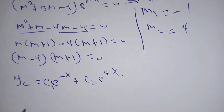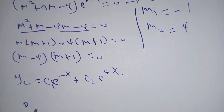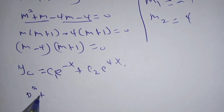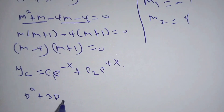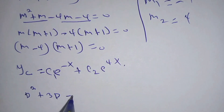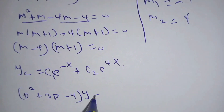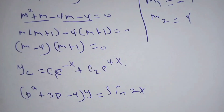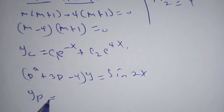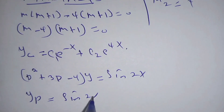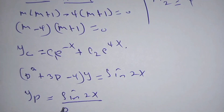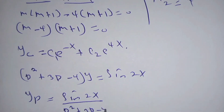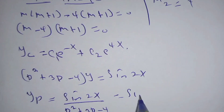To solve the particular part by the inverse D operator method, we write it in symbolic form as D squared plus 3D minus 4 times y equals sin(2x). Our particular solution yp will be given by sin(2x) divided by (D squared plus 3D minus 4).